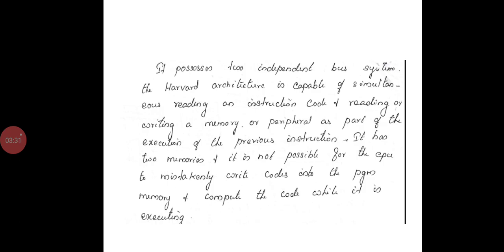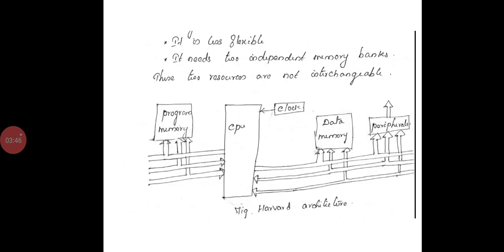It possesses two independent bus systems and the Harvard architecture is capable of simultaneously reading an instruction code or reading or writing memory or peripherals as part of the execution of the previous instruction. There are two memories and it is not possible for the CPU to mistakenly drive code into the program code. It is less flexible and it means two independent memory banks. These two resources are not interchangeable. This is the block diagram for the Harvard architecture.